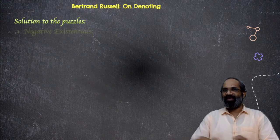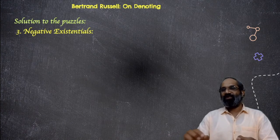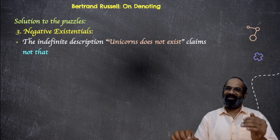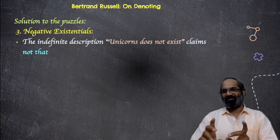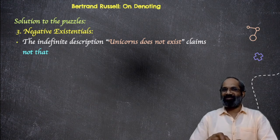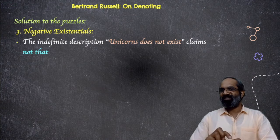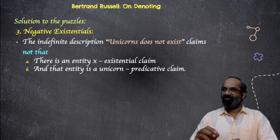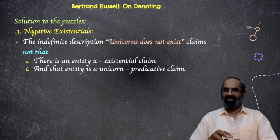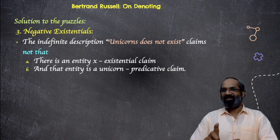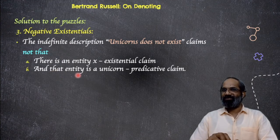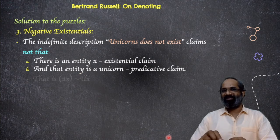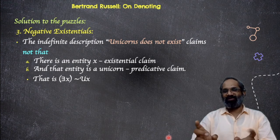Now moving on to the theory of negative existentials. In that case, we have seen that 'unicorns do not exist.' It actually asserts the existence of unicorns on one hand and denies it on the other. It is an indefinite description — 'unicorns do not exist,' or we can say 'no unicorns exist.' Since it is using 'no,' it is an indefinite description, so there must be two claims. The first one is the existential claim and the second one is the predicative claim. According to the existential claim, there must be an entity called x, and the predicative claim is that that entity is a unicorn. You can represent it symbolically as: there exists at least one x such that not-Ux. You can rephrase the statement 'unicorns do not exist' using these two claims: there exists an x — that is the existential claim — and the predicative claim that that x is a unicorn and that it does not exist.